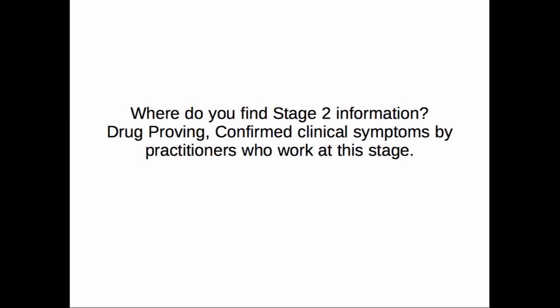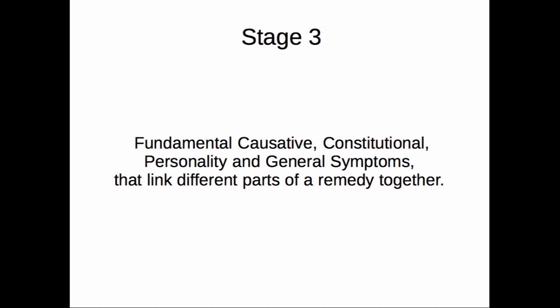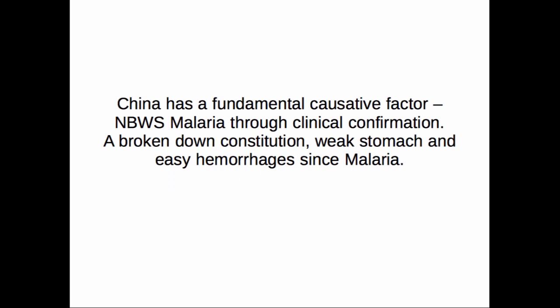You find Stage 2 symptoms in drug provings, confirm them clinically, and then look at practitioners who work at this stage — practitioners like Boenninghausen, Nash, and Clarke — who define remedies just one step beyond the clinical diagnosis. Now let's look at Stage 3 information. This is the breakthrough — where holism comes in and where the remedy is creating its fundamental causative and constitutional effects. The personality and the generals come up here. There is now a linking of different parts of a remedy coming together as one whole. The holistic concept starts with Stage 3, because before that it's just particulars and symptoms scattered and spread across.